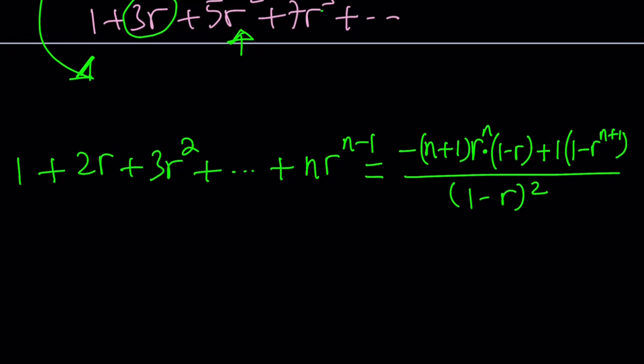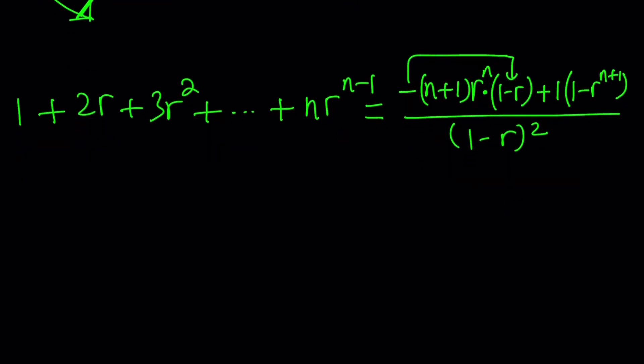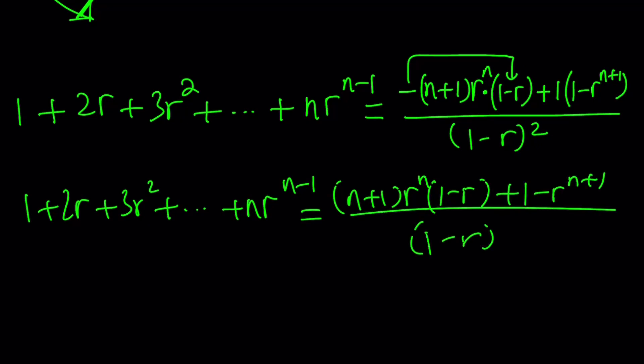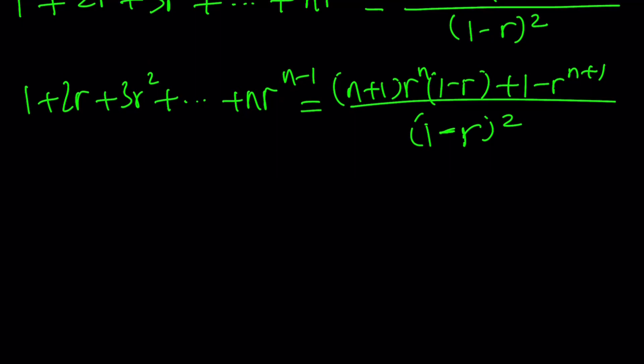Now we can go out and negate this 1 minus r thing, and then our term is going to turn into this. Let's go ahead and do: 1 plus 2r plus 3r squared all the way up to n r to the power n minus 1 is going to be n plus 1 r to the n times 1 minus r plus 1 minus r to the n plus 1 divided by 1 minus r squared. That's kind of like a little confusing, but don't worry. It's going to get more confusing. So now, what do I do next?